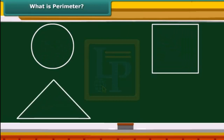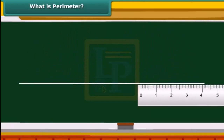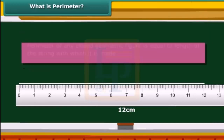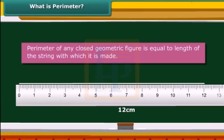Unite the string and measure its length. The length of the string is the perimeter of the chosen geometric shape. We can generalize by saying that the perimeter of any closed geometric figure is equal to the length of the string with which it is made.